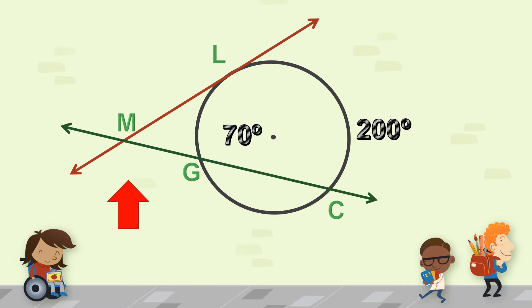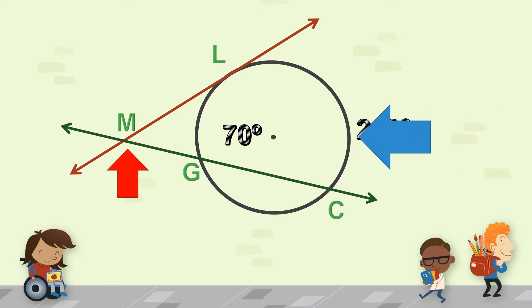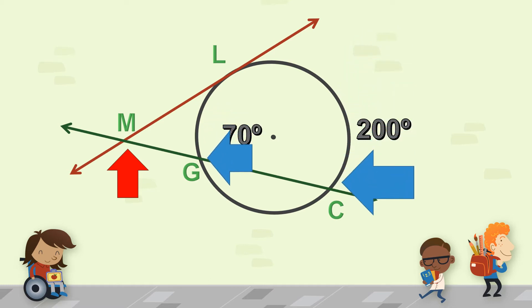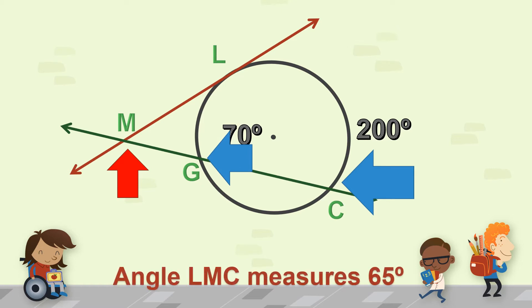Another example. We have tangent line ML and secant line LMC. We would like to find out the measure of angle LMC. The measure of the bigger arc, arc LC, is 200 degrees and the measure of the smaller arc is 70 degrees. According to the theorem, you get the difference and then divide by two. So 200 degrees minus 70 degrees is 130 degrees, then divide by two — we get 65 degrees as the measure of angle LMC.